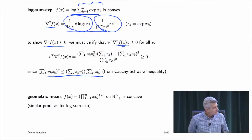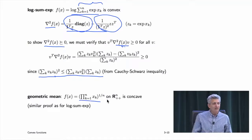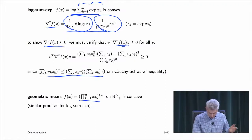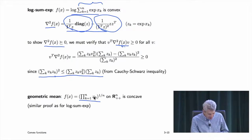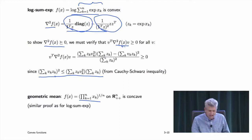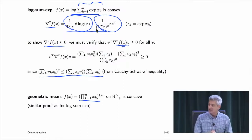The geometric mean — the nth root of the product of a bunch of positive numbers — is concave. For this function and many similar ones, the Hessian turns out to be non-negative diagonal minus rank-one, and the same type of Cauchy-Schwarz argument applies.